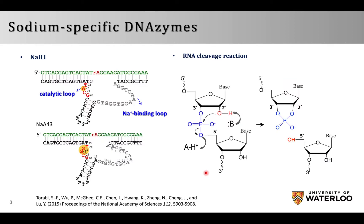In recent years, DNAzymes have shown great potential for sodium detection. In our lab, a DNA enzyme called NNH1 has been obtained from in vitro selection. It is a single-strand DNA sequence that can cleave the substrate strand by binding with sodium ions. The reaction starts from the 2'OH group attacking the nearest phosphate group, causing the leaving of the 5' oxygen. This DNA enzyme can be considered as a mutant from a previously reported DNA enzyme named NNH43, where two guanines are mutated into an adenine in the small catalytic loop.